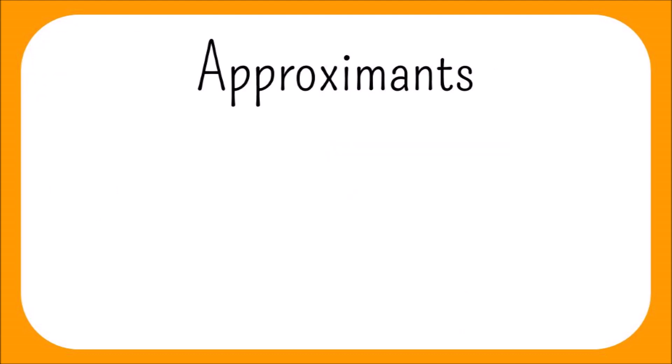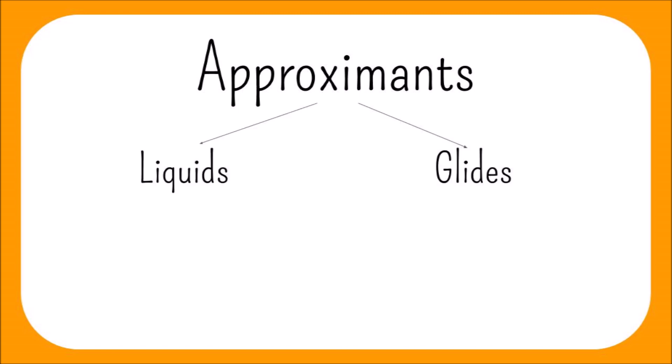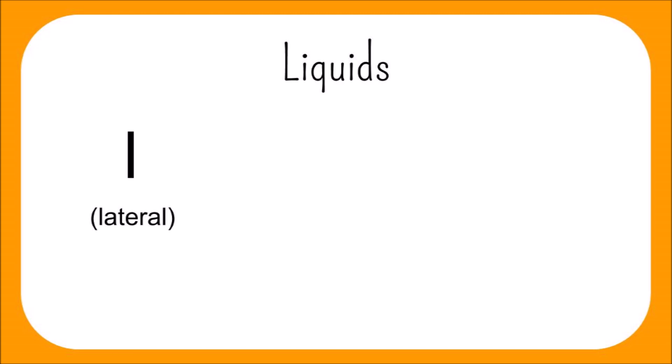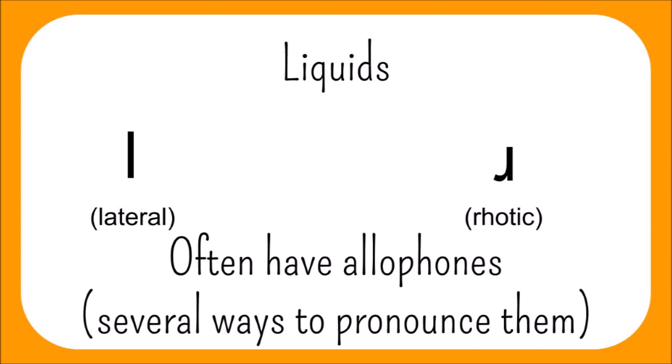English has four approximants, which can be further split into liquids and glides. English has two liquids: L, which is lateral, and R, which is rhotic. Liquids are a class of consonants that generally have a lot of freedom in English phonetics. They often have allophones, meaning that there are several ways to pronounce them.